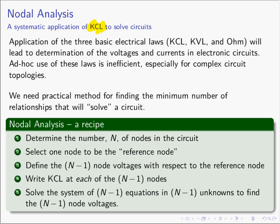Step one in the nodal analysis recipe: determine the number of nodes in the circuit — there will be n of them. Step two: pick one of those n nodes to be the reference node. Step three: the remaining n minus 1 nodes need to have a voltage defined with respect to the reference node — the plus polarity at the node, minus polarity at the reference. Step four: go to each of those n minus 1 nodes and write KCL, giving you n minus 1 KCL equations.